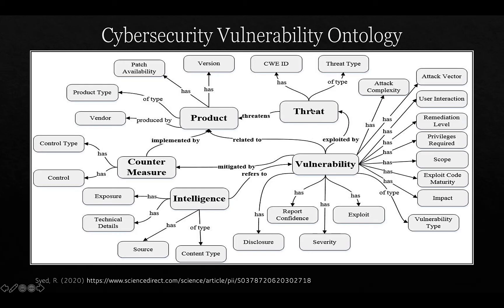The vulnerability ontology is also related to threats by the fact that vulnerabilities are exploited; it's related to a product and version, and patch availability, because that determines whether the vulnerability is present. Intelligence is related to vulnerabilities in terms of how it's used to discover them, and finally, vulnerabilities can be mitigated using countermeasures and controls.